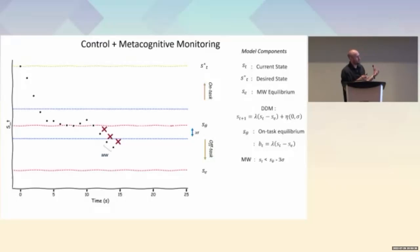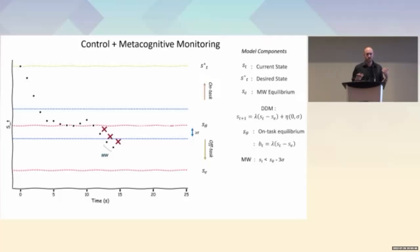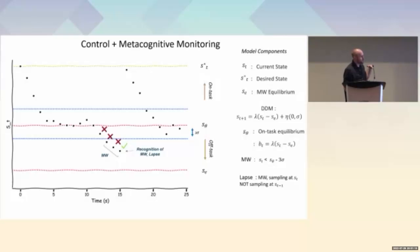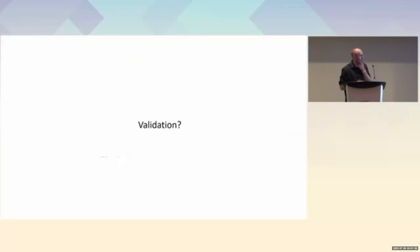Mind wandering is defined as any state more than three standard deviations below the mean on-task equilibrium. Intuitively this makes sense: as participants meditate, they learn what a mind-wandering event is, and anything further from where they typically are triggers such an event. On a subsequent time step, a sample occurs, a large error is generated, a large control signal brings attention back to breath, which drifts back toward the mean equilibrium. This process repeats for however long the meditation lasts.